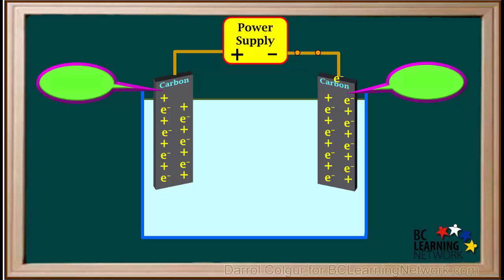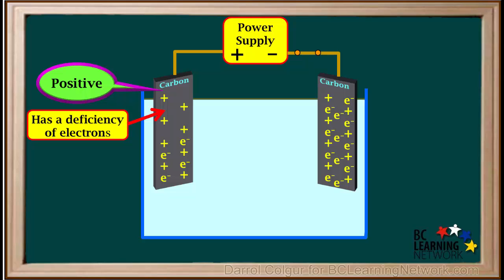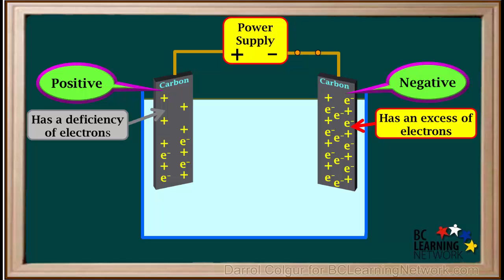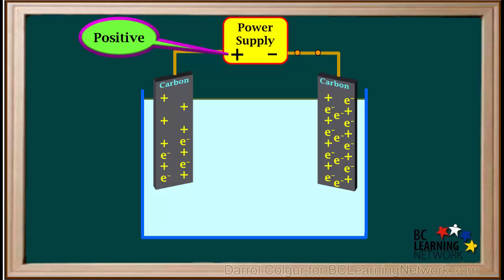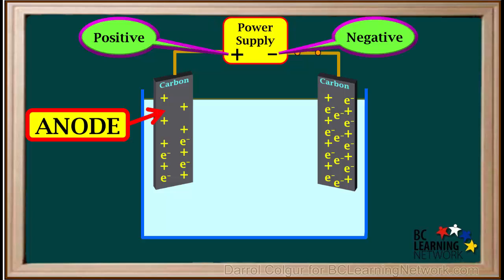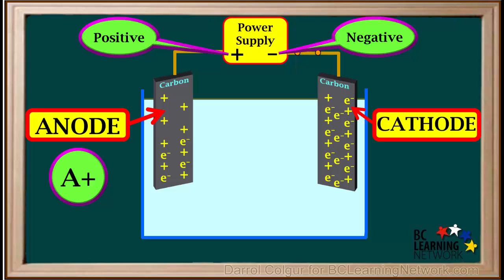When we close the switch and connect the power supply, it takes electrons from the electrode attached to the positive terminal and pumps them onto the electrode attached to the negative terminal. The electrode on the left now has a deficiency of electrons, giving it a net positive charge. And the electrode on the right now has an excess of electrons, giving it a net negative charge. In an electrolytic cell, the electrode attached to the positive terminal of the power supply is called the anode. And the electrode attached to the negative terminal of the power supply is called the cathode. Just remember A-plus for anode and C-minus for cathode. Remember this only works for an electrolytic cell, not an electrochemical cell.